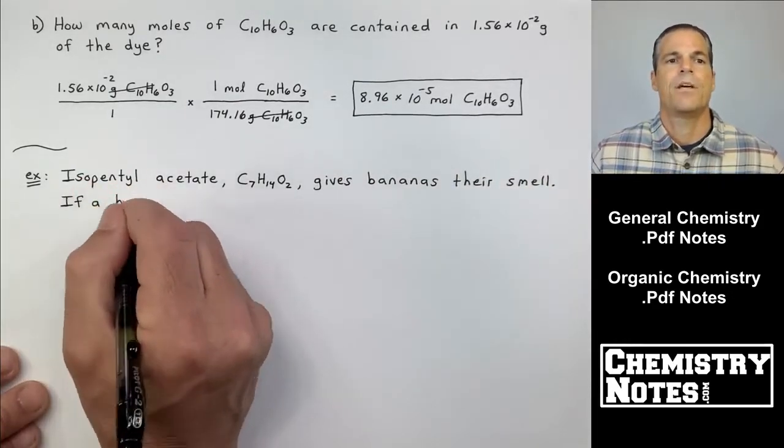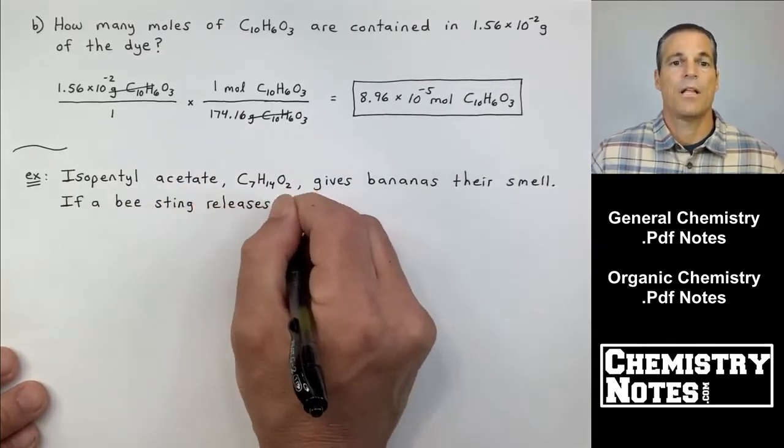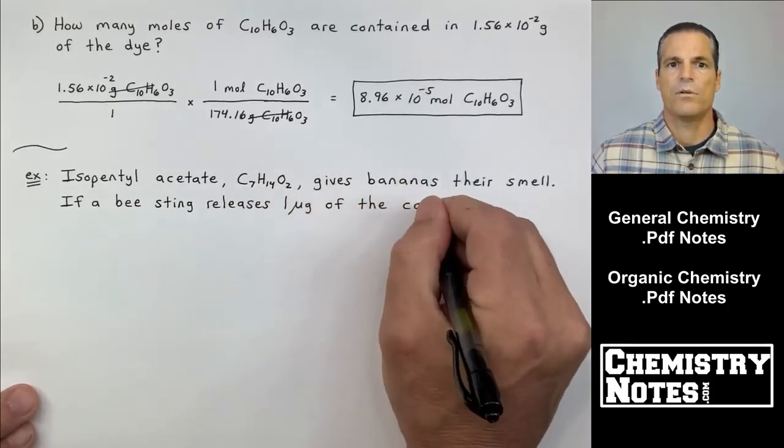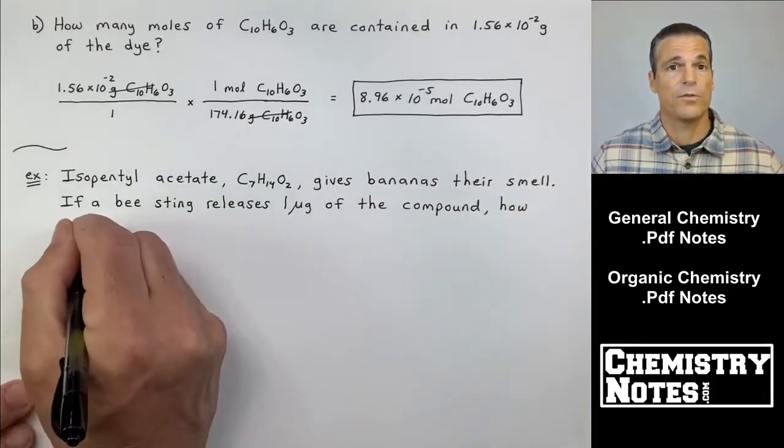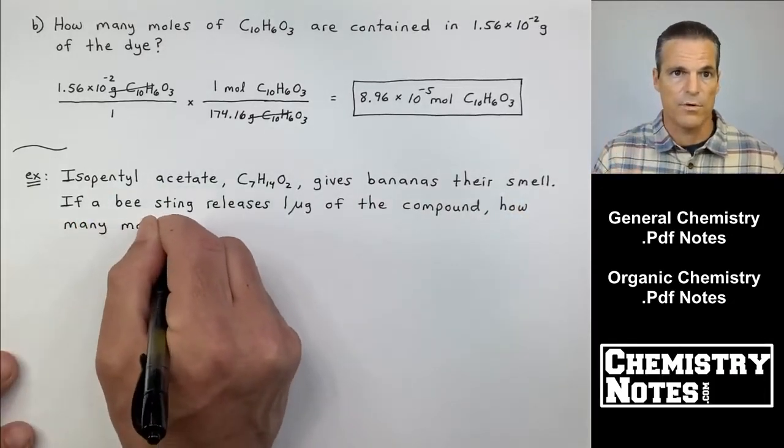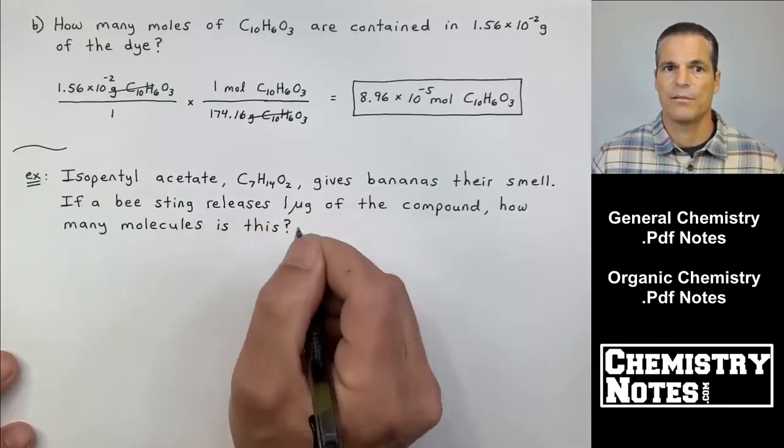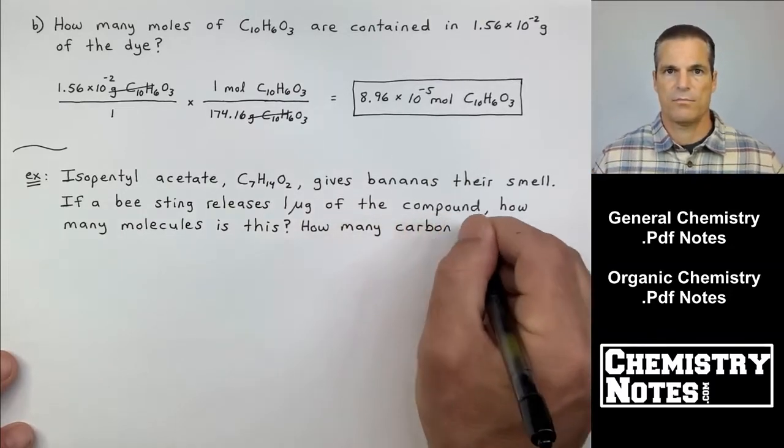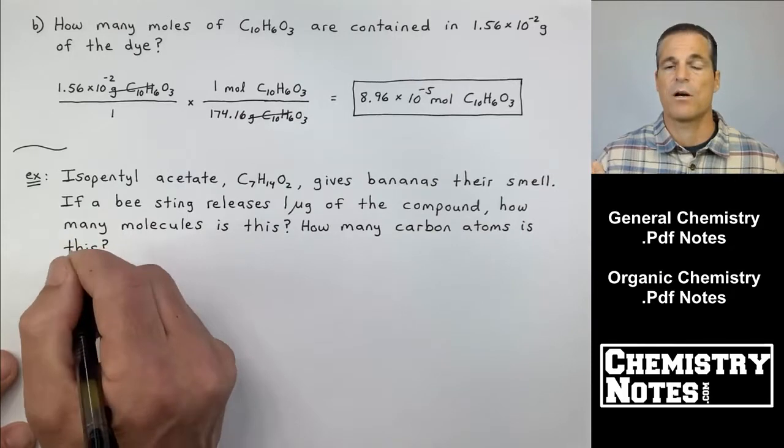Okay, another example problem: isopentyl acetate. Luckily they've given us a formula, right? C7H14O2 gives bananas their smell. That's great, that's just superfluous information. Let's hone in on what's important. We've got one microgram of the compound. We want to go from one microgram to molecules, and then once we've got molecules we can do the second part of the question, which is how many carbon atoms.